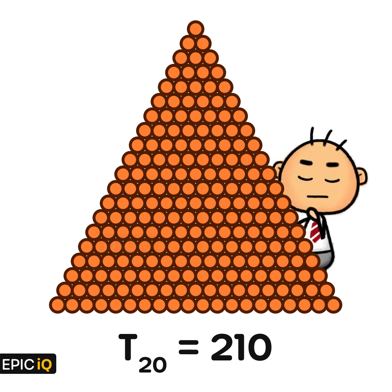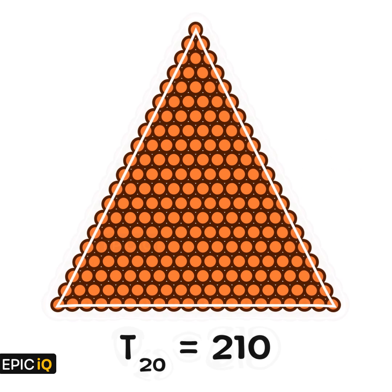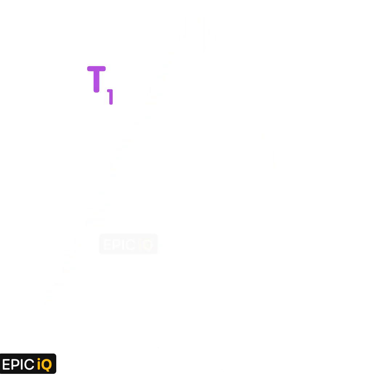A triangular number, or triangle number, counts objects arranged in an equilateral triangle. So, the first triangle number is obviously 1. The second triangle number is 3. The third triangle has 3 points on every side, and the total number of points is 6.